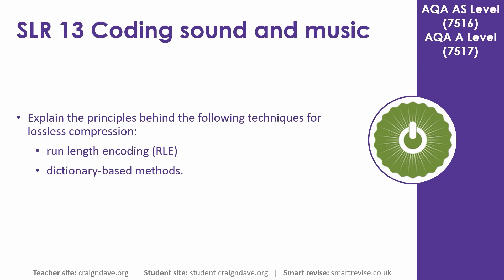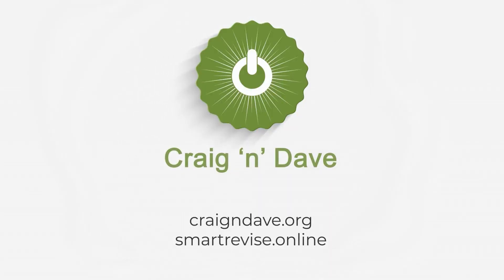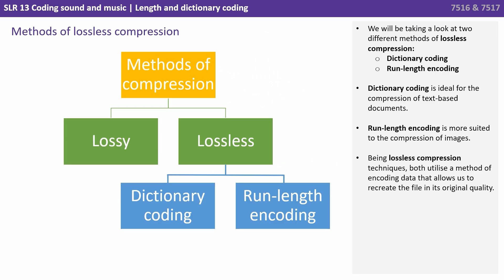In this video we explain the principles behind two techniques for lossless compression: run length encoding and dictionary based methods. Dictionary coding is ideal for the compression of text based documents, and run length encoding is more suited to the compression of images. Being lossless compression techniques, both utilise a method of encoding data that allows us to recreate the original file in its full quality.